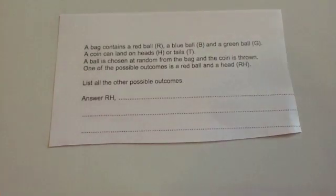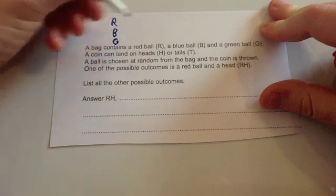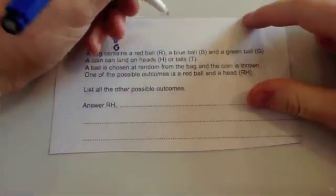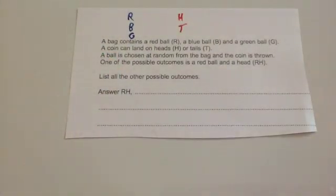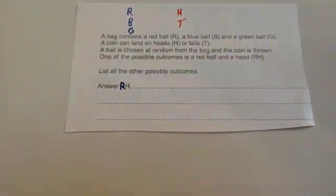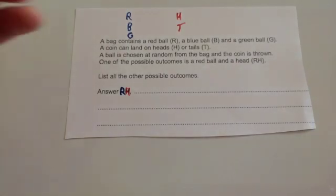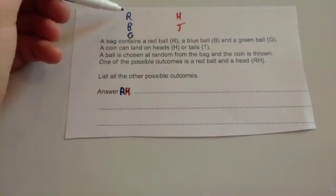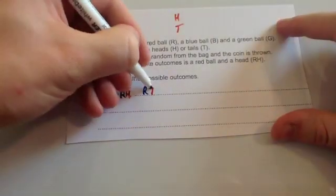So we've got a bag. And in the bag we've got red, blue, and green. And then the coin is heads or tails. So the first outcome of a red and a head is listed. So let's then do the rest. So we've got red and a head. We have then red and a tail. So notice I'm doing this in a systematic way, red and a tail.